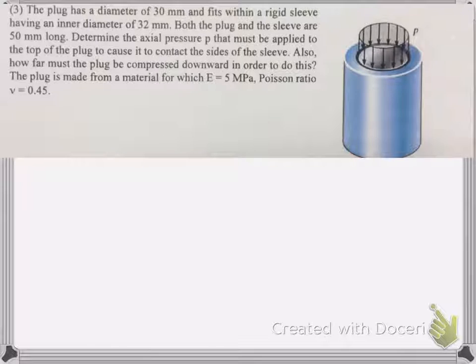We have the Young's modulus and the Poisson's ratio, Poisson not poison, it's a French name, 0.45. So let's write what we got. We got the diameter of the smaller one, I'm just going to call D, the plug is 30 millimeters, and big D I'll call, since it's the larger one, 32 millimeters of the sleeve. We know Young's modulus and we have Poisson's ratio.